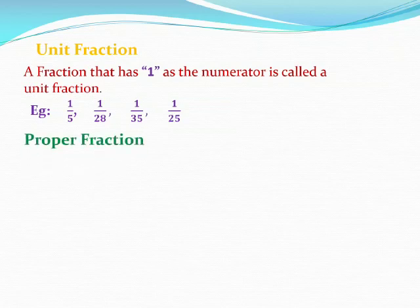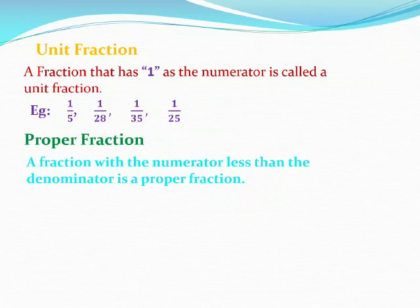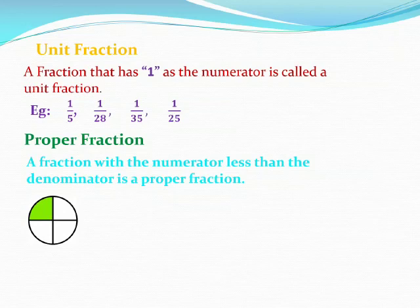Next, what is a proper fraction? A fraction with the numerator less than the denominator is called a proper fraction. Let us take some examples. In this figure, there are 4 equal parts. The circle is divided into 4 equal parts. Out of that, 1 part is shaded. What is the fraction for this part? 1 by 4. Here 1 is the numerator and 4 is the denominator.